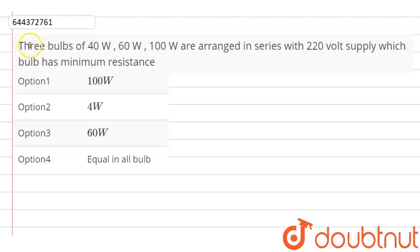In this video, we are going to discuss this question: Three bulbs of 40 watt, 60 watt, and 100 watt are arranged in series with 220 volt supply. Which bulb has minimum resistance? See friend, as we know...